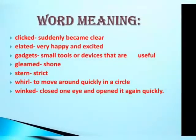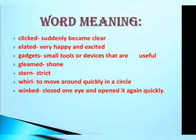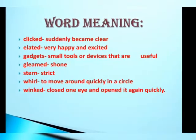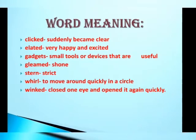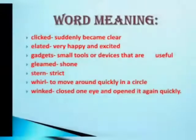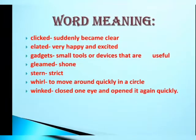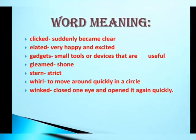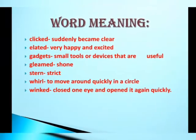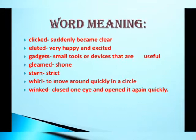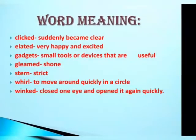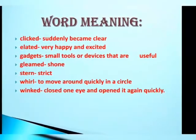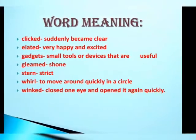Word meanings: 'clit' — suddenly became clear. 'Elated' — very happy and excited; the author was very elated when he saw the time machine. 'Gadgets' — small tools or devices that are useful. 'Gleamed' — shone. 'Stern' — strict. 'Vril' — to move around quickly in a circle; the time machine was vrilling. 'Winged' — closed one eye and opened it again quickly.